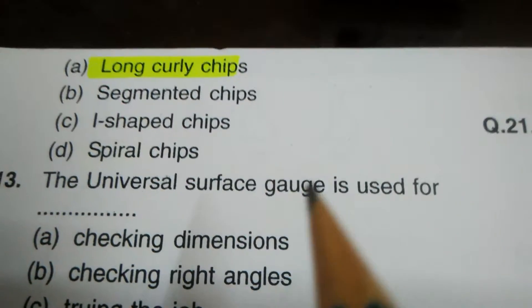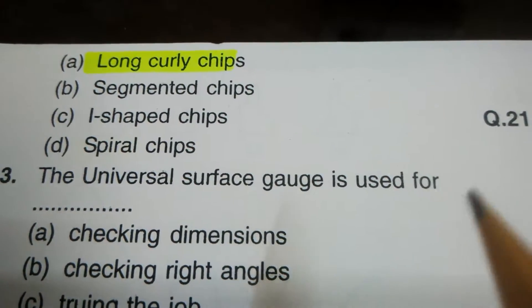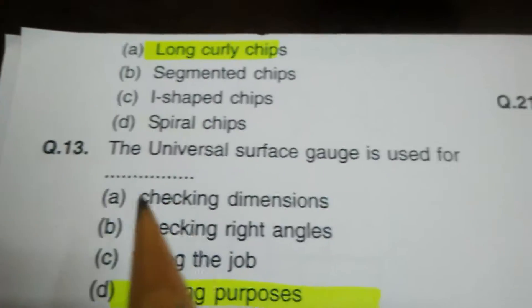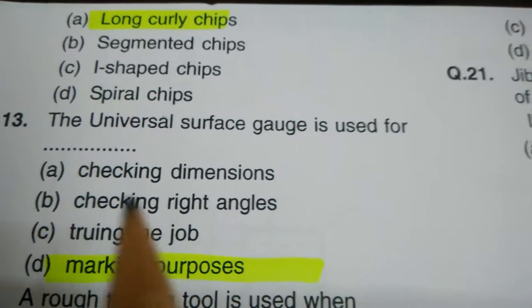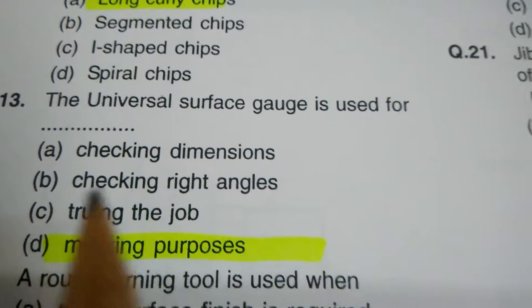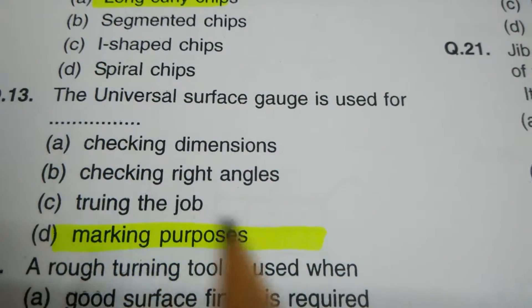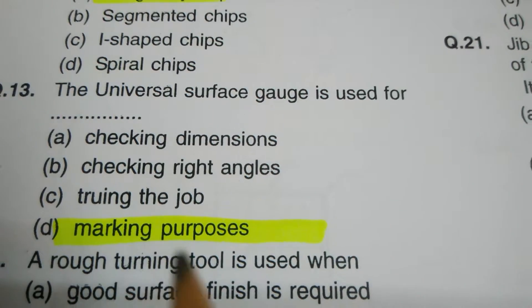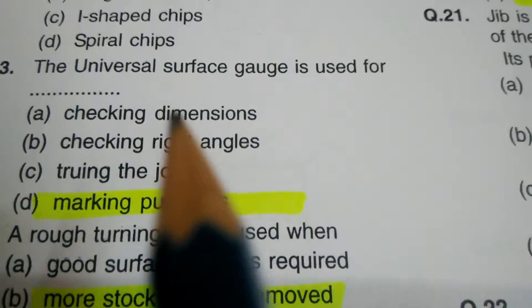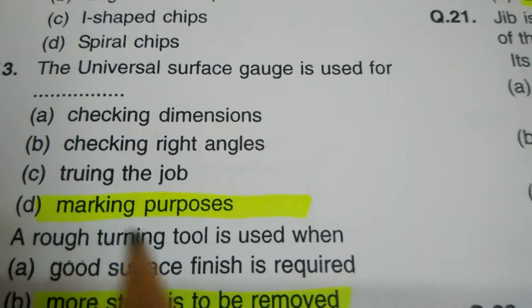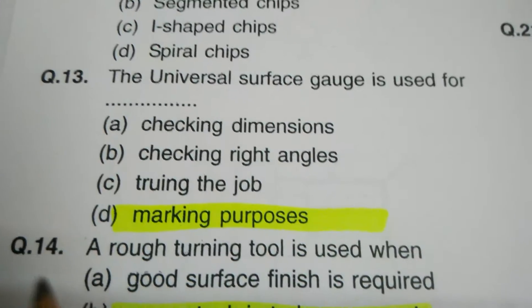Question number thirteen. The universal surface gauge is used for dash dash: options are checking dimension, checking right angle, turning the jaw, marking purpose. The correct answer is: marking purpose.